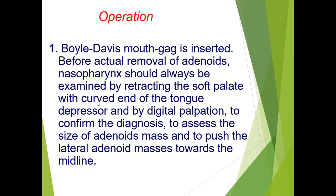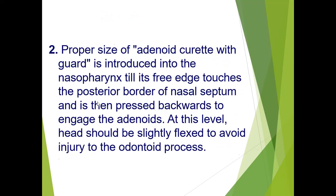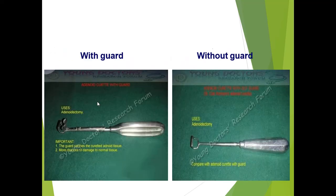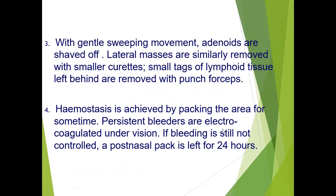A Boyle-Davis mouth gag is inserted. Before actual removal of the adenoids, they should be palpated to assess the size and to push the lateral adenoid mass towards the midline. The proper size of adenoid curette is then introduced into the nasopharynx and the adenoids are shaved off. The head should be slightly flexed during this maneuver to avoid injury to the odontoid process. The adenoid curette is available with or without a guard. With a gentle sweeping movement, adenoids are shaved off, always remaining in the midline to avoid injuring the eustachian tube openings. Hemostasis is achieved by packing; persistent bleeders are electrocoagulated under vision, and if bleeding is not controlled, a postnasal pack is left for 24 hours.